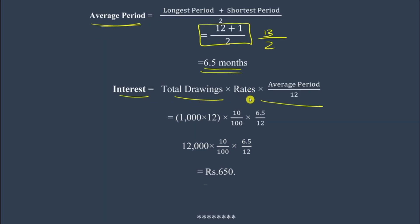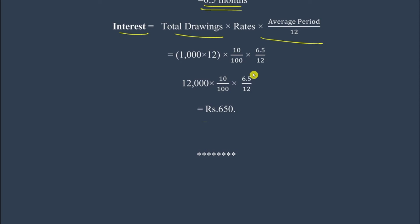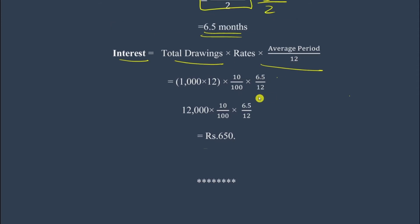Now apply the formula: Interest = Total Drawings × Rate × Average Period / 12. Total drawings = 1,000 per month × 12 months = 18,000. Rate = 10 / 100. Average period = 6.5 months. So: 18,000 × 10/100 × 6.5/12. Cancelling zeros: 120 × 6.5 / 12 = 650 rupees. So the interest for drawings at the beginning of every month is 650 rupees.